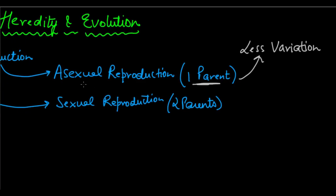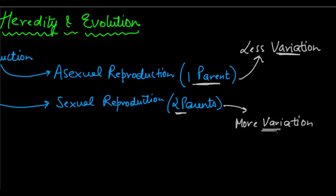Since in asexual reproduction there is only one parent organism involved, we say there is less variation because there is not much scope for it — there may be one or two errors, but not a high level of variation. But in sexual reproduction, because there are two parents involved, there is more variation. Why? Number one, we already have DNA copying errors, and number two, two parents are giving their characteristics, which are going to be merged, with some being more dominant and some less dominant. So less variation in asexual reproduction, more variation in sexual reproduction.